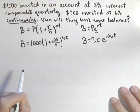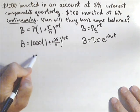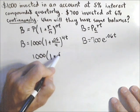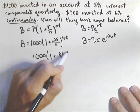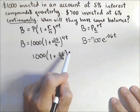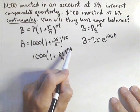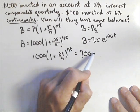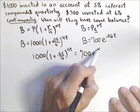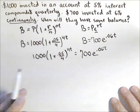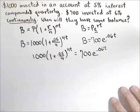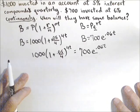So once we have our two balances, basically the equation we're trying to solve is when 1,000 times (1 + 0.05/4)^4T, or you could simplify that to 1.025 to the 4T, equals 700 E to the 0.06T. So that's the equation we want to solve. I have another video that shows how to do this algebraically, but right now I just want to concentrate on the graphing calculator.